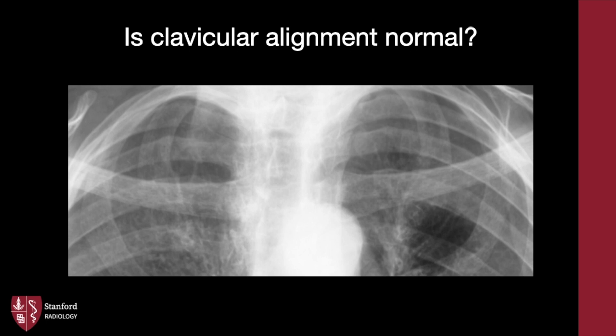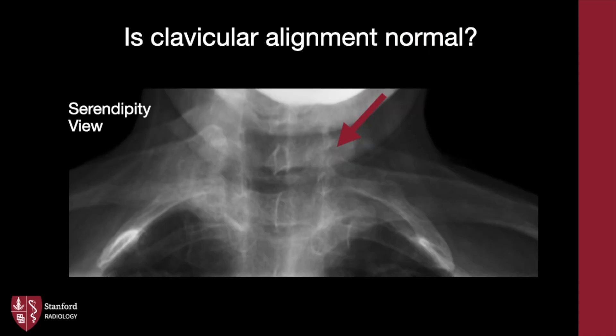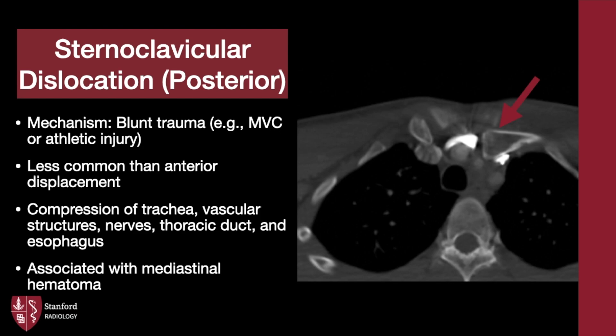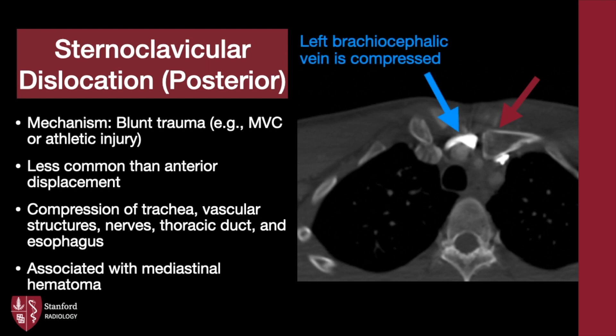Our next patient presents after trauma. Is the clavicular alignment normal? Remember, one needs an upshot view, or better yet a CT, if clinical concern is high for malalignment. Note the medial head of the left clavicle projects inferior to the right. Here is a 3D reformat of a subsequent CT. This is sternoclavicular dislocation, particularly the posterior type. The left brachiocephalic vein is also compressed by the displaced clavicular head.